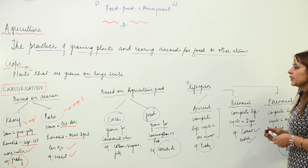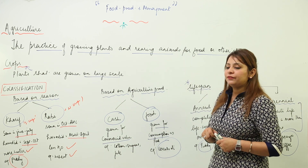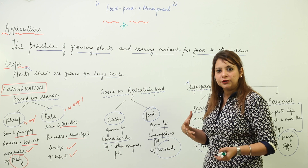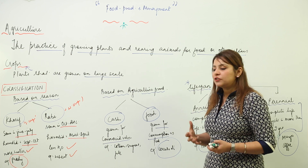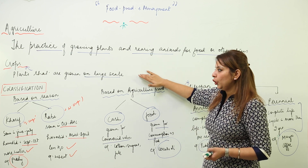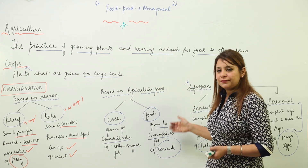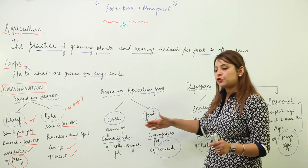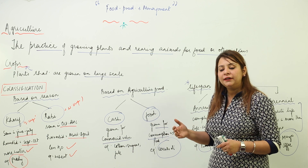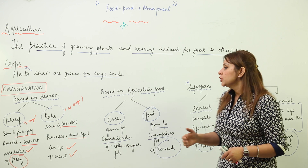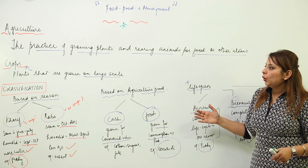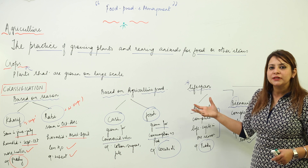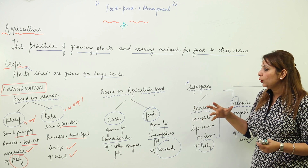Perennial crops require more than two years for the completion of their life cycle — examples include mango and coffee. So this is how you classify crops. We are now much aware of the introduction to this chapter: what agriculture is, what crops are, and how you can classify them as kharif or rabi, cash or food, and annual, biennial, or perennial.